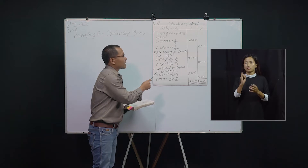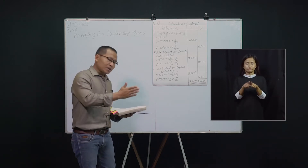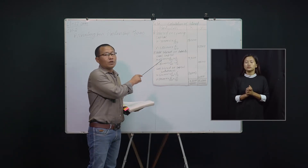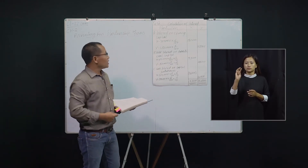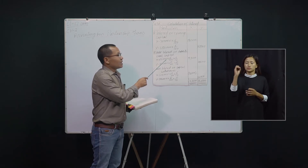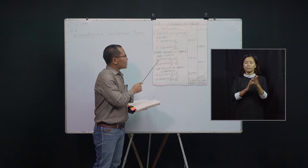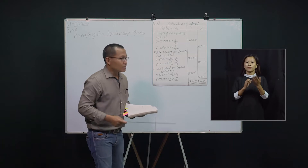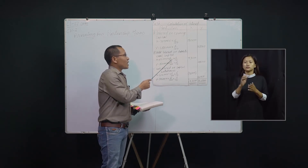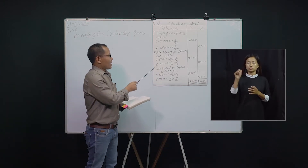Next is to add interest on additional capital. There is additional capital introduced by X in the middle of the year. X introduced 60,000 in the month of May. From 1st May till 31st March next year it comes to 11 months. So 60,000 into 6 by 100 into 11 months by 12 comes to 3,300.